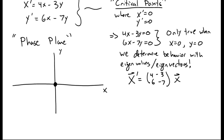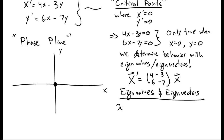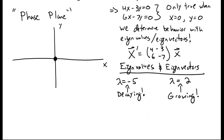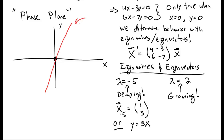Writing our system of equations as a set of matrices and vectors, we find the eigenvalues and eigenvectors of this matrix. One eigenvalue is -5, which corresponds to a decaying solution — decaying with time. The corresponding eigenvector for λ = -5 is (1, 3), or equivalently y = 3x. On the phase plane, if you draw the line y = 3x, solutions along this line decay to 0.